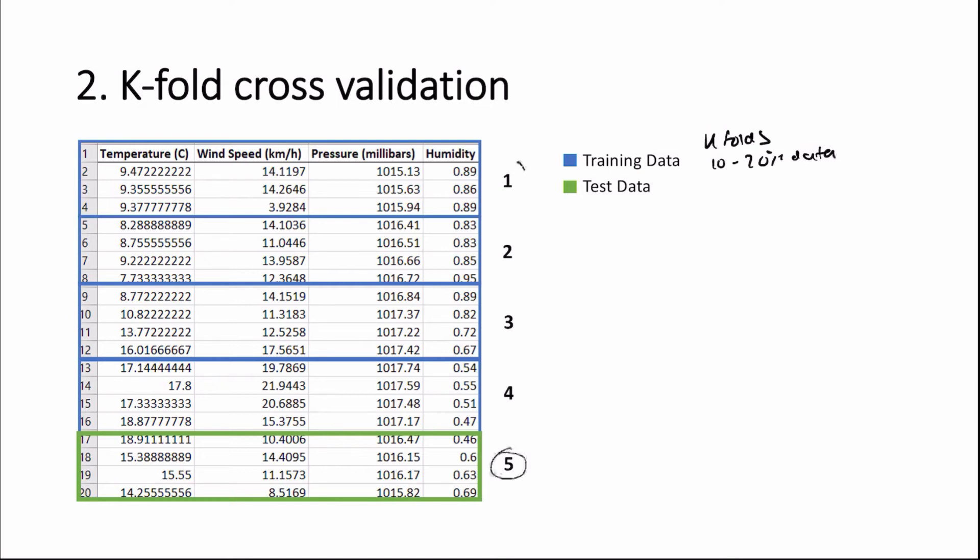So here, we're using the first four folds to construct our model. And this will produce some parameters. So let's say theta zero, theta one, and theta two. And then we're going to be evaluating this model using the fifth fold. And we use the following formula to do so. So we can attribute the cost of the fifth fold as a variable j5.